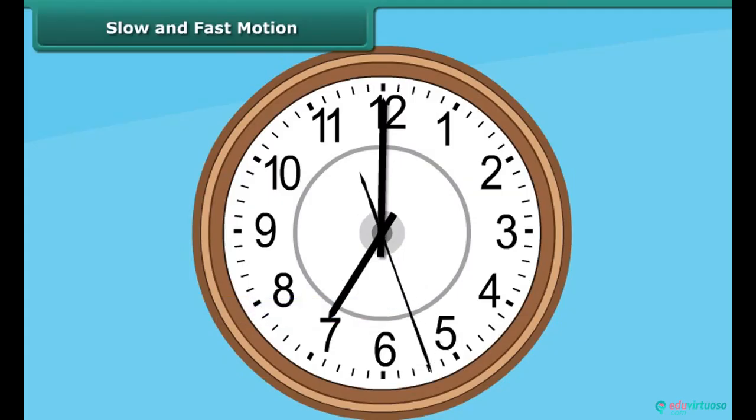The smallest needle which is also the slowest is called the hour hand. It completes one revolution in 12 hours. The needle smaller than the second hand and longer than the hour hand is the minute hand. It moves slower than the second hand but faster than the hour hand. It completes one revolution in 1 hour.